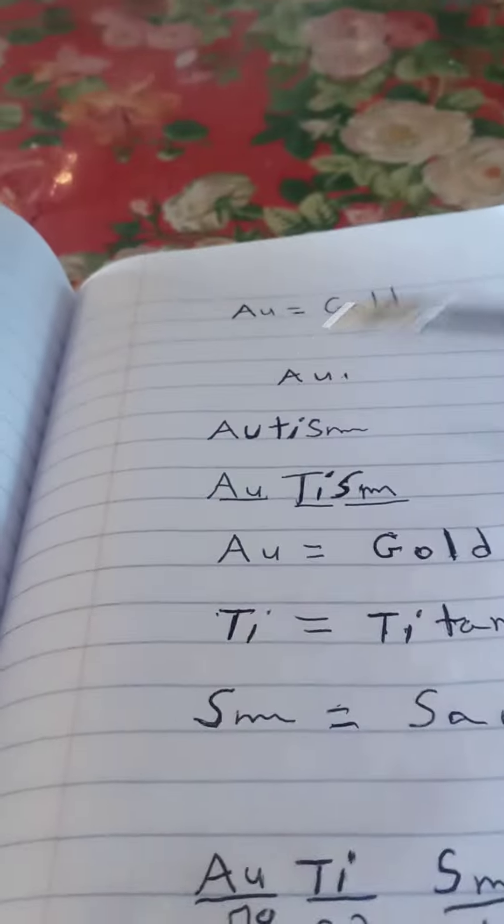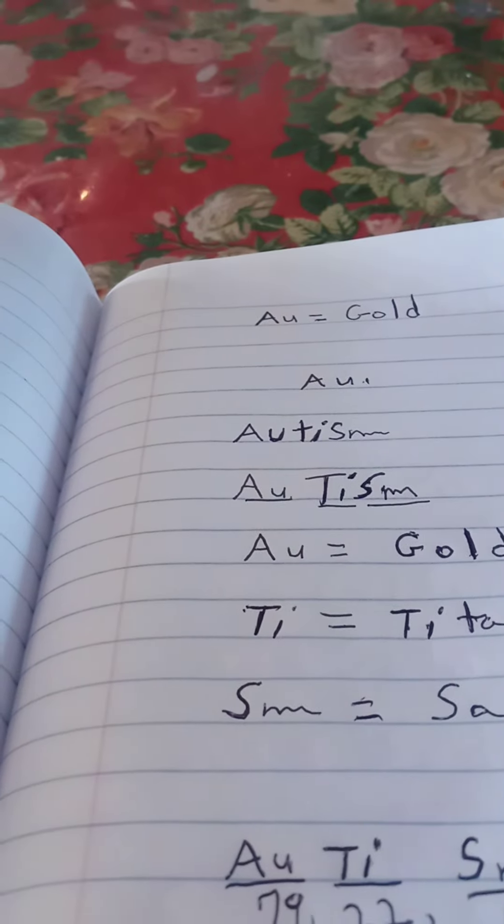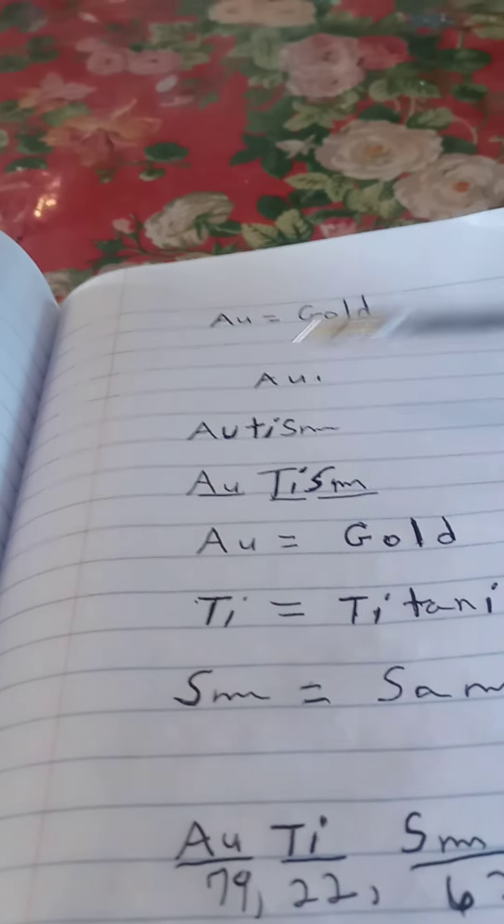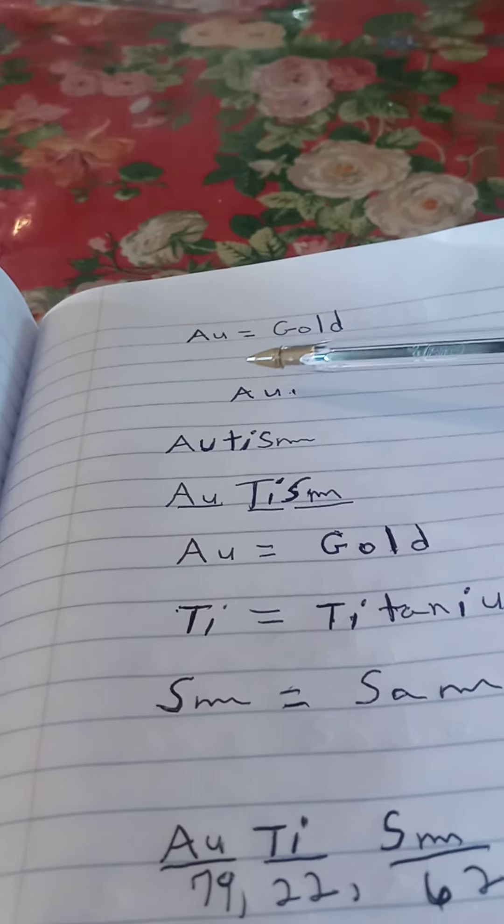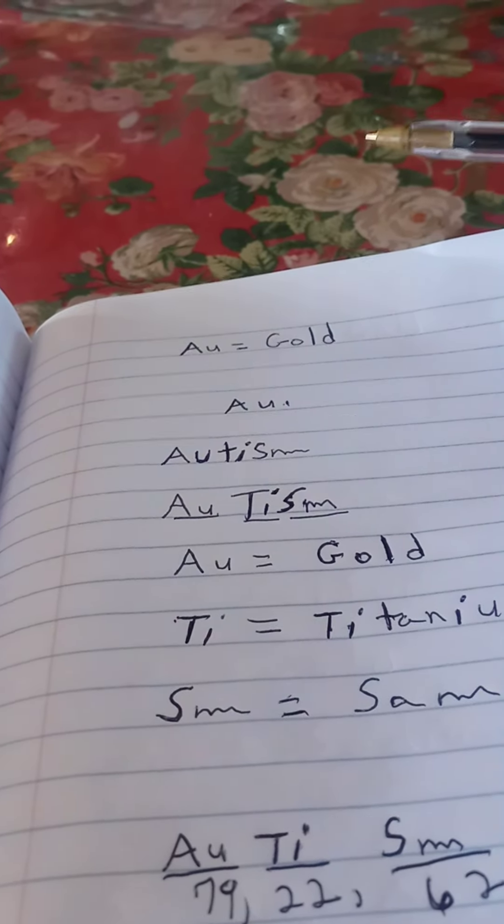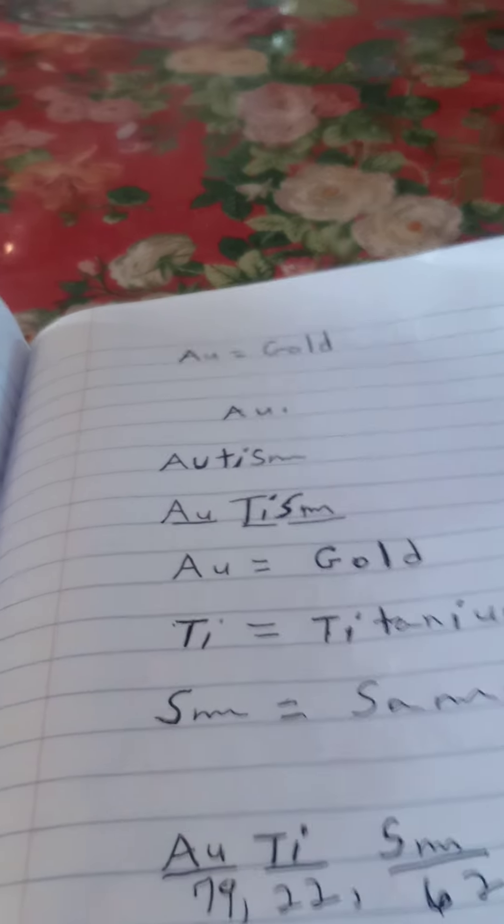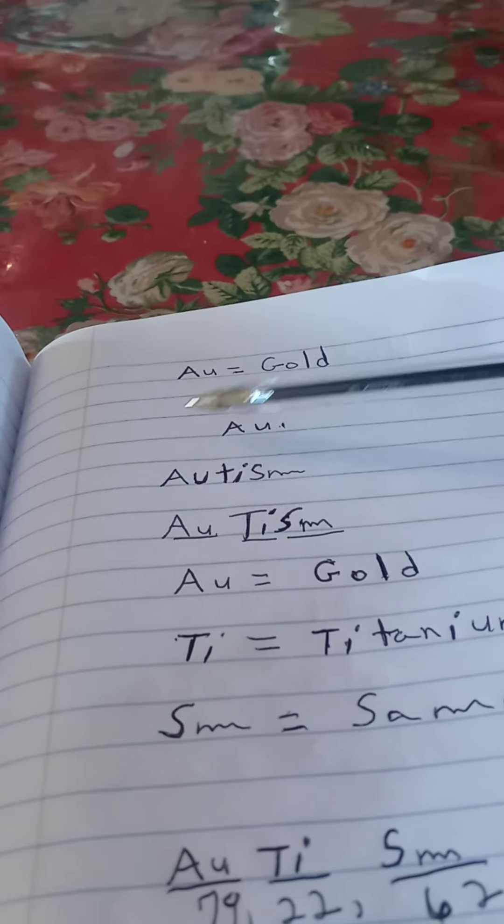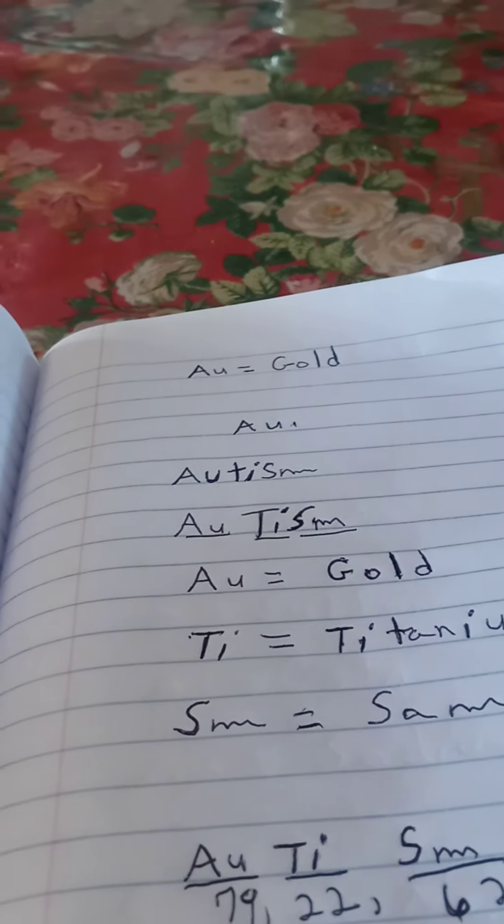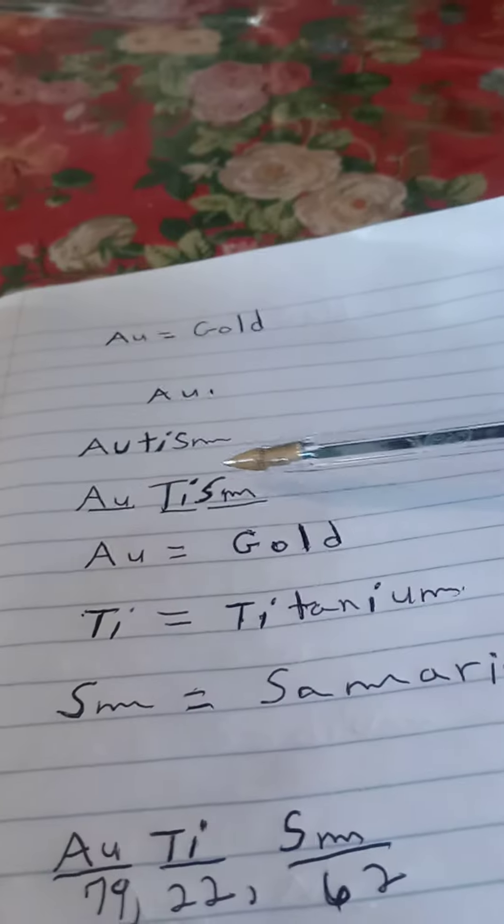But I would study the chemical symbols and the elements. Okay? Don't be tricked. With a capital A and a small u, it stands for gold. You would think there would be a capital G for gold, but no, it's capital A-U. All right? So that's how it is. And you got the word autism. It will help you out. All right?